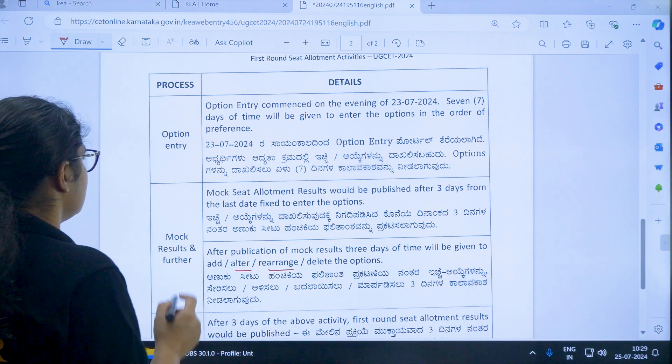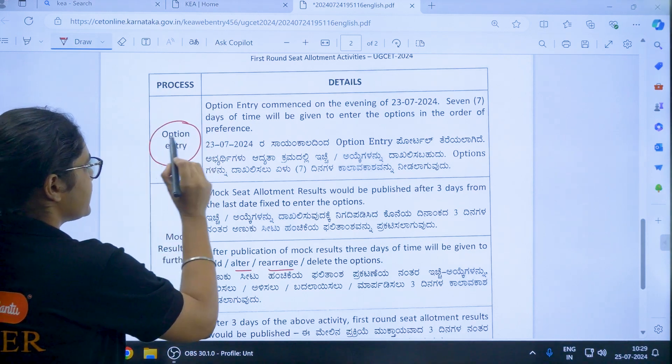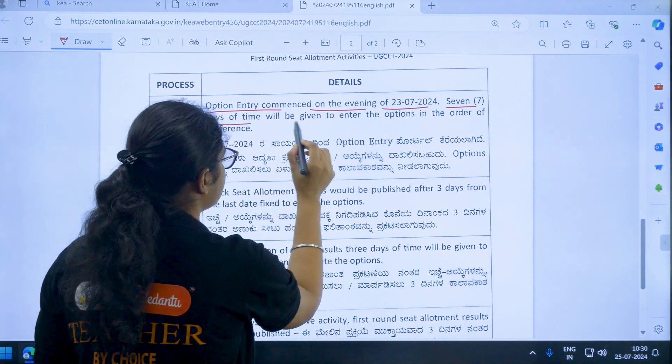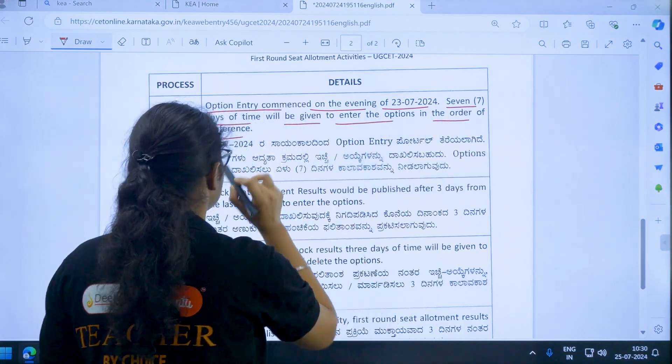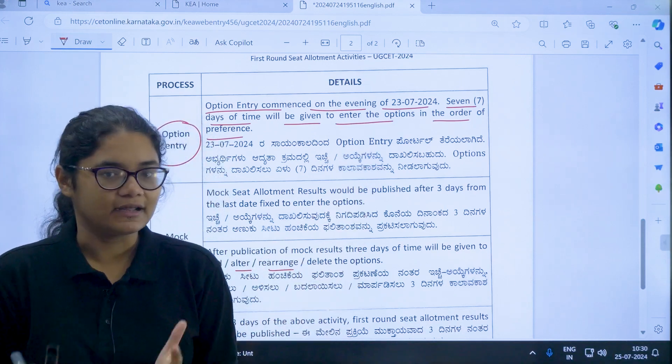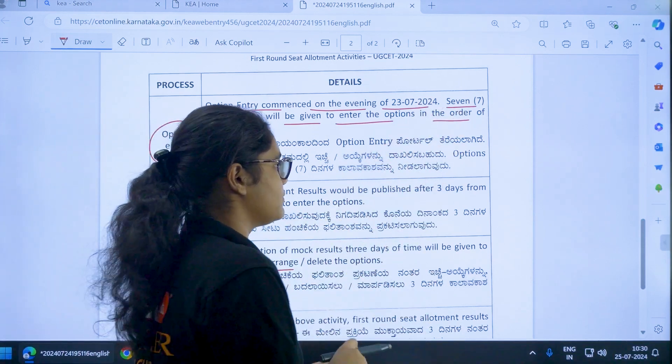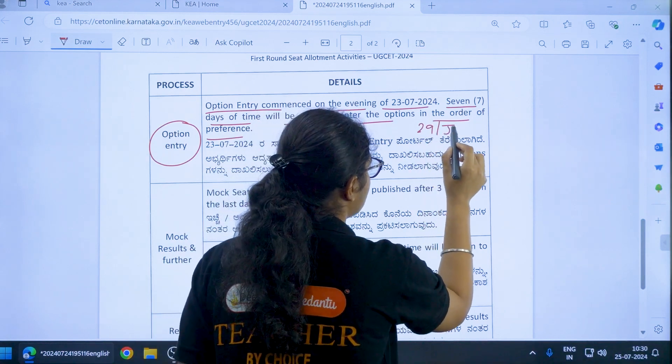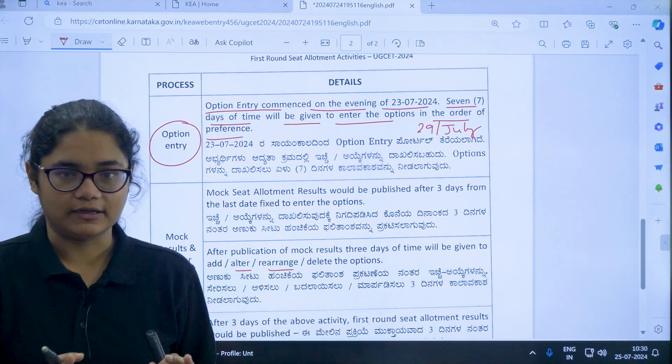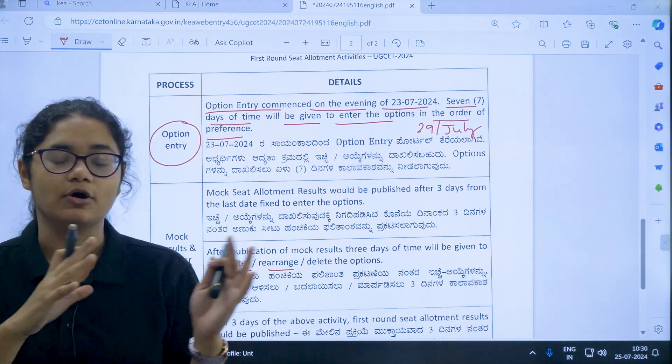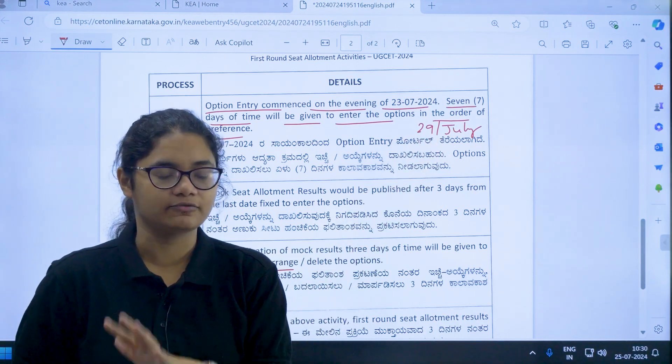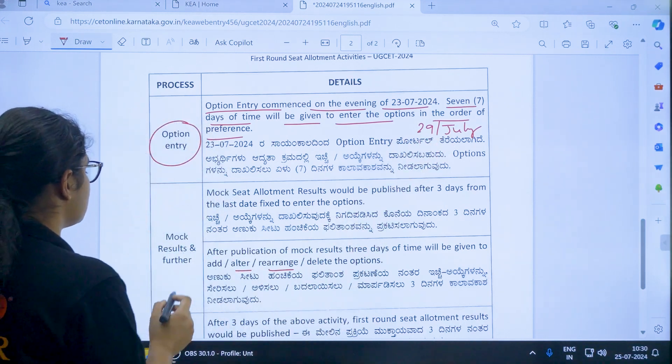Now let us see that the first activity is option entry. You can see option entry commenced on the evening of 23rd July. Seven days of time will be given to enter the options in the order of preference. So if 23rd is the date evening where the option entry has started, if you count 7 days from there, you'll be getting around 29th of July. So by 29th of July you must finish your option entry so that you do not have to hustle or hurry at the end. Just keep a target that 29th July is the last date for you to finish your option entry.